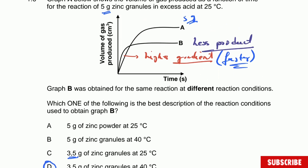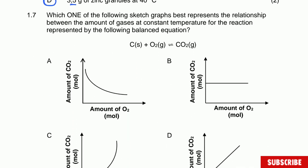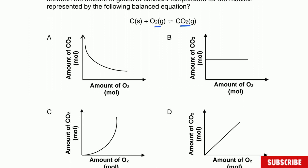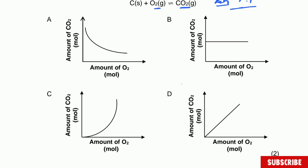Question 1.7: which sketch graph best represents the relationship between amounts of gases at constant temperature for the given balanced equation? In this reaction, the gases O2 and CO2 have exactly the same number of molecules on both sides, so the ratio is one-to-one. If you increase one, the other increases proportionally, or vice versa. The correct answer is D, showing a directly proportional relationship.